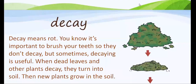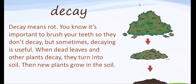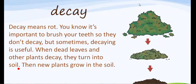Our next word is decay. Decay means to rot. You know it's important to brush your teeth so they don't decay. But sometimes decaying is useful. When dead leaves and other plants decay, they turn into soil, and then new plants grow in that soil.